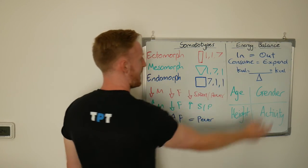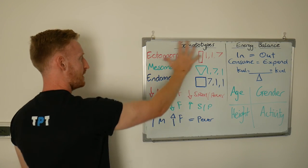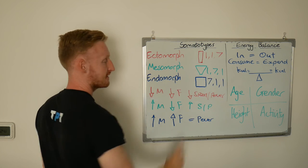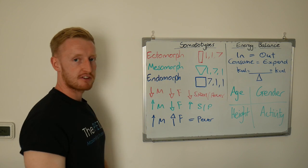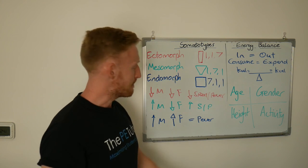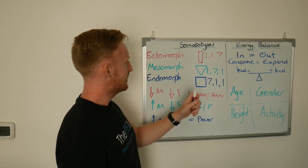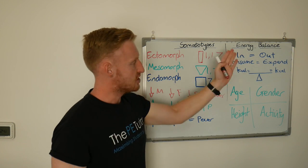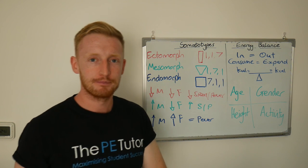And if they start to play around with their energy balance, if they go into a positive one or a negative one, they might start to see a change in their somatotype. Either way, they might start to see a change in their muscle mass. They might start to see a change in their fat mass. And that is somatotyping and energy balance. Hope you found that useful, and I look forward to seeing you again in the next one. Bye for now.